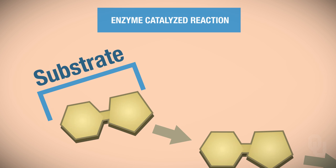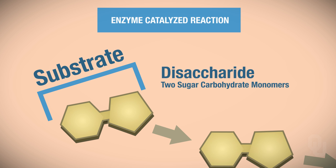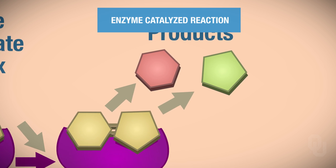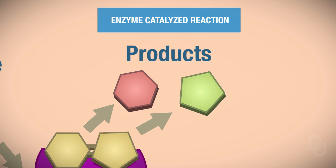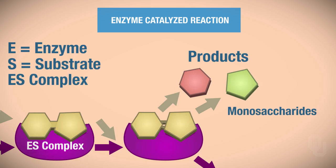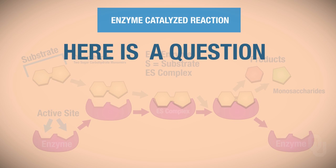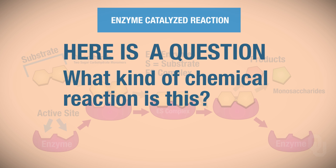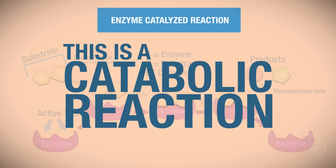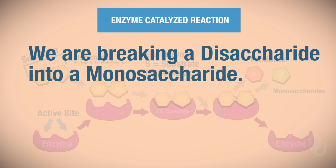Let's look closely at what this substrate is, tying this information in to previous material. This substrate is a disaccharide — you have two carbohydrate monomers. In this disaccharide, we're going to break the chemical bond holding together these two sugars, and when we do that, our products are actually called monosaccharides. So what kind of chemical reaction is this — anabolic or catabolic? This would be called a catabolic reaction because we're breaking down a biomolecule; we're breaking a disaccharide down into monosaccharides.